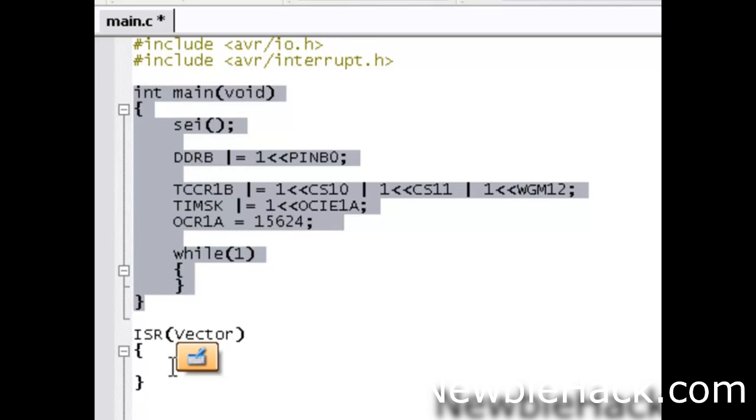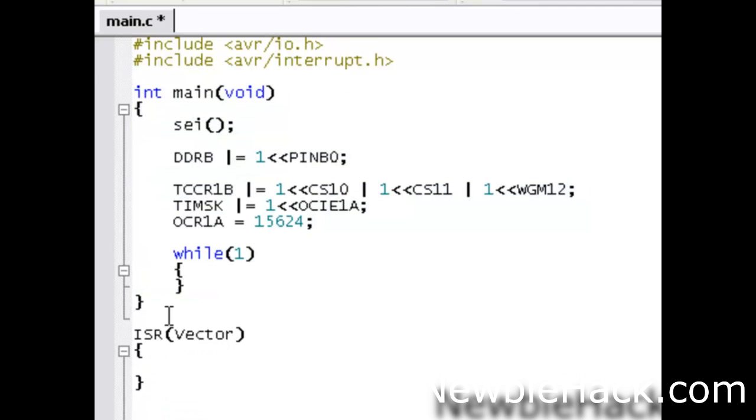We need to update the vector, because this is where our, when it does hit this number, when the TCNT1 hits this number that is located in the OCR1A, it's going to go straight to this routine here. And I'm going to make it blink the LED that's on port B. And we're going to use the XOR bitwise operation. And it's located at pin B0, our LED.